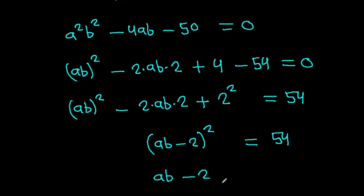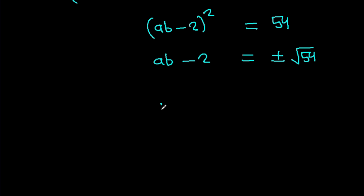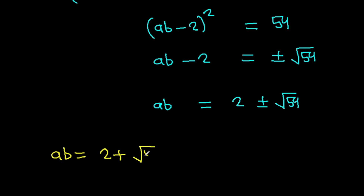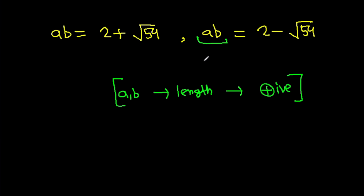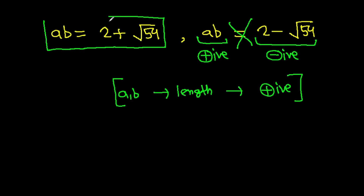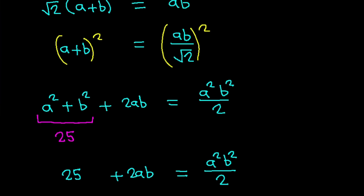Solving the quadratic: AB minus 2 equals plus or minus root 54. So AB equals 2 plus root 54 or AB equals 2 minus root 54. Since AB must be positive and 2 minus root 54 is negative, it is not possible. Therefore AB equals 2 plus root 54.